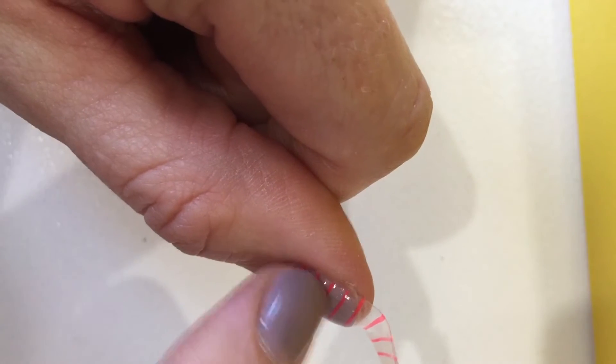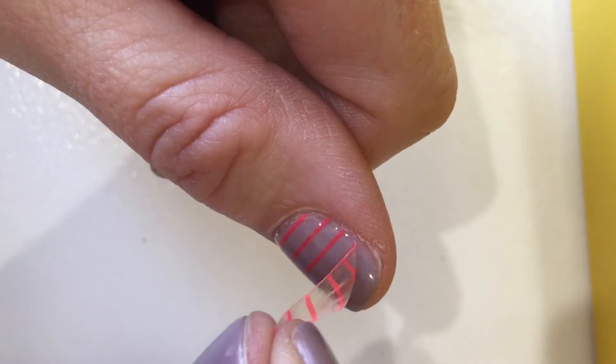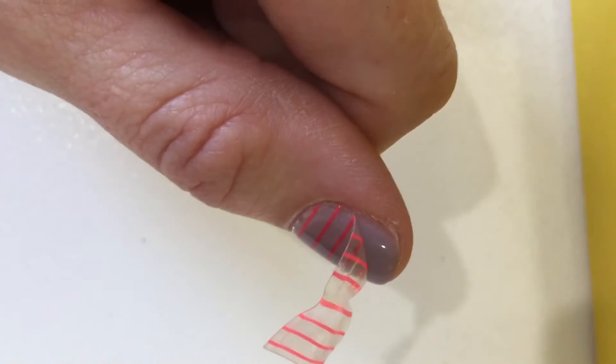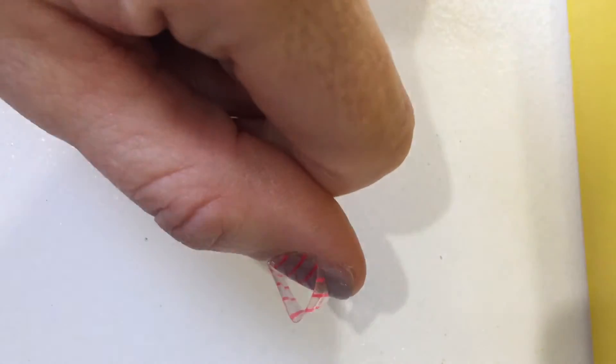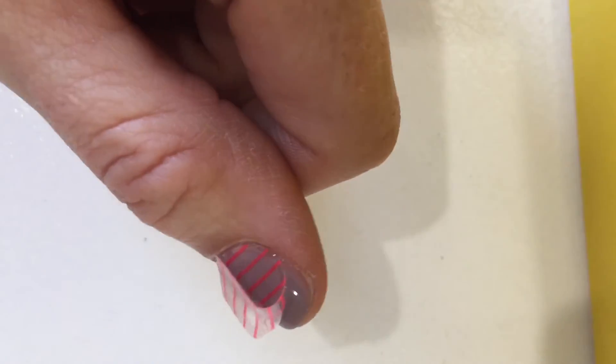Now say you have a wrinkle here. Let's pretend there's a wrinkle there. You can pull it back until the wrinkle's out, and then just reheat it with your hairdryer and lay it back down.